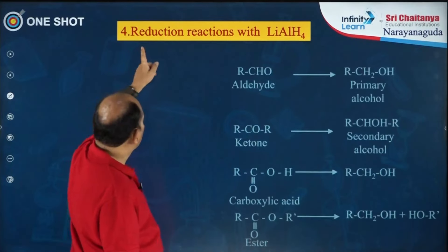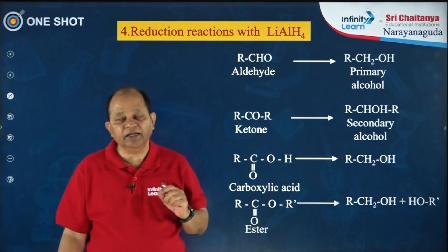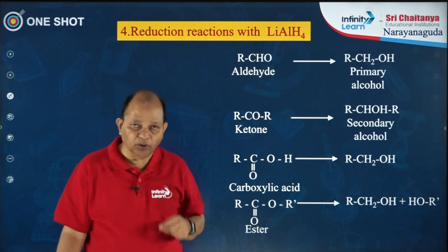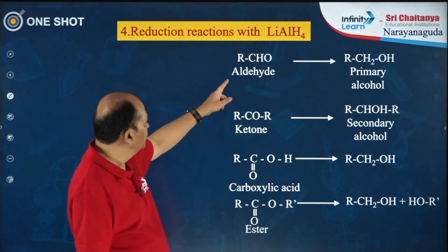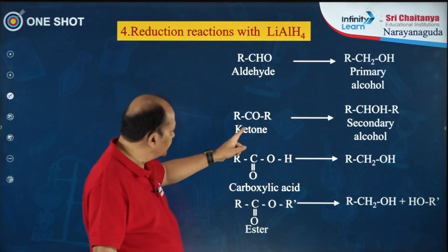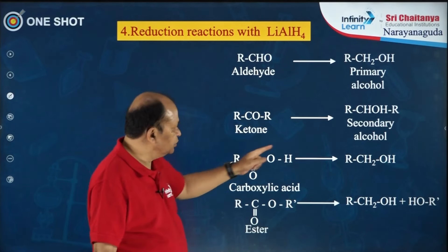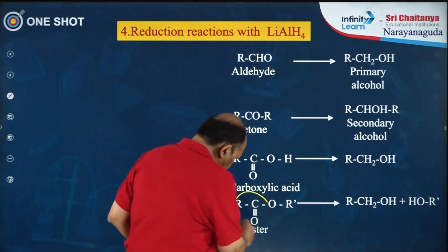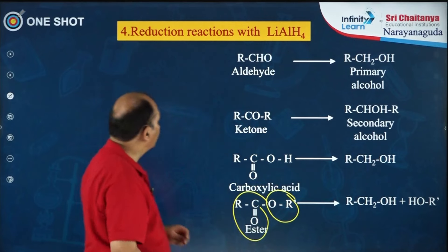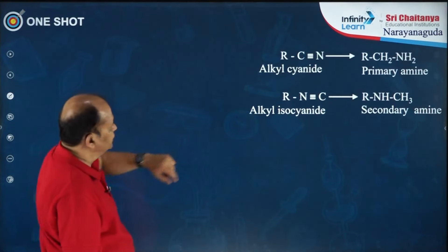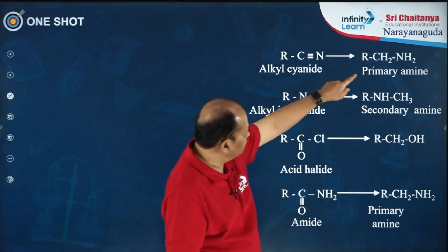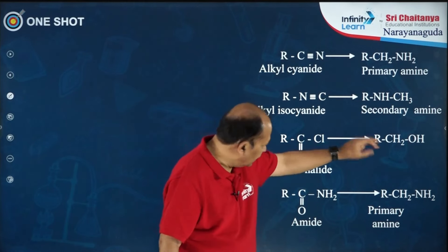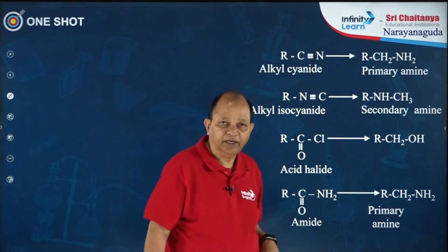The next reagent is reduction reactions with lithium aluminum hydride — this is a very important hydride ion donor reagent. LiAlH4 will reduce aldehydes to primary alcohol, ketones to secondary alcohols, acids to primary alcohols, and esters to two alcohols. Additionally, alkyl cyanide gives primary amine, alkyl isocyanide gives secondary amine, acid chloride gives alcohol, and amide converts to primary amine.